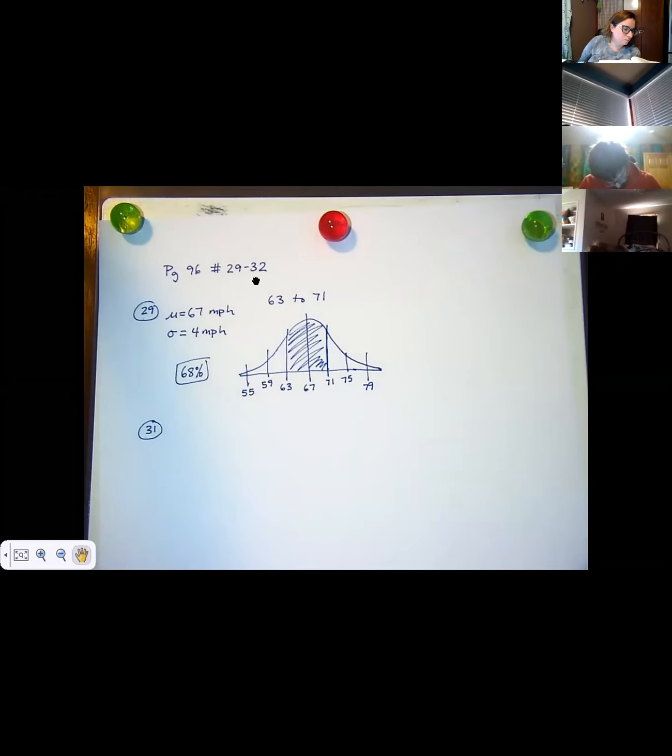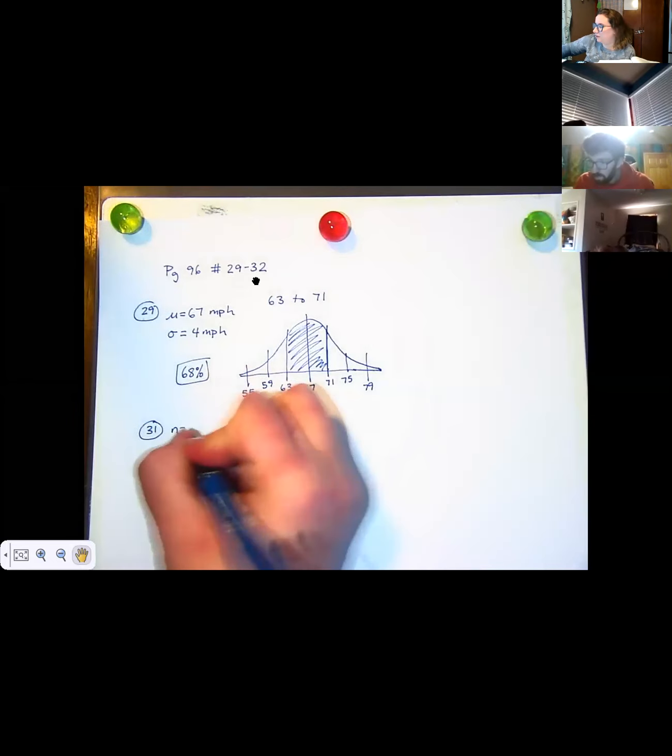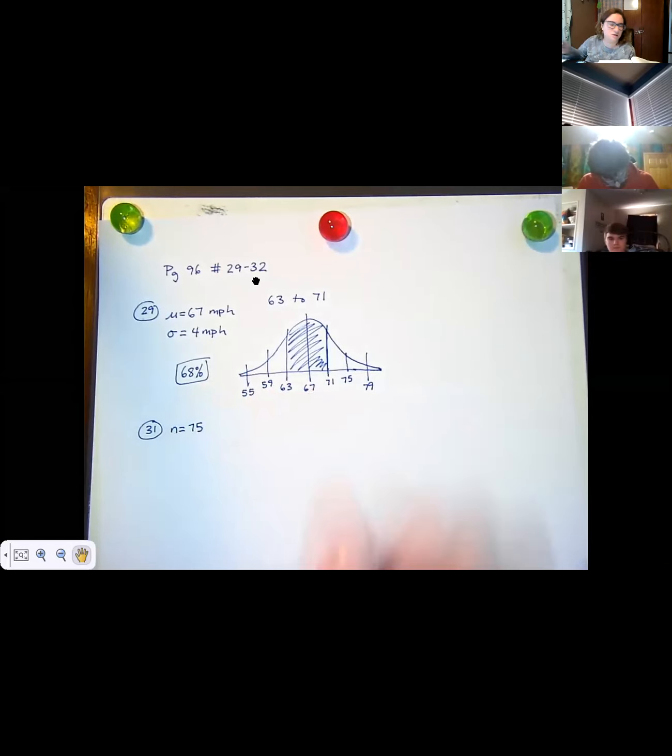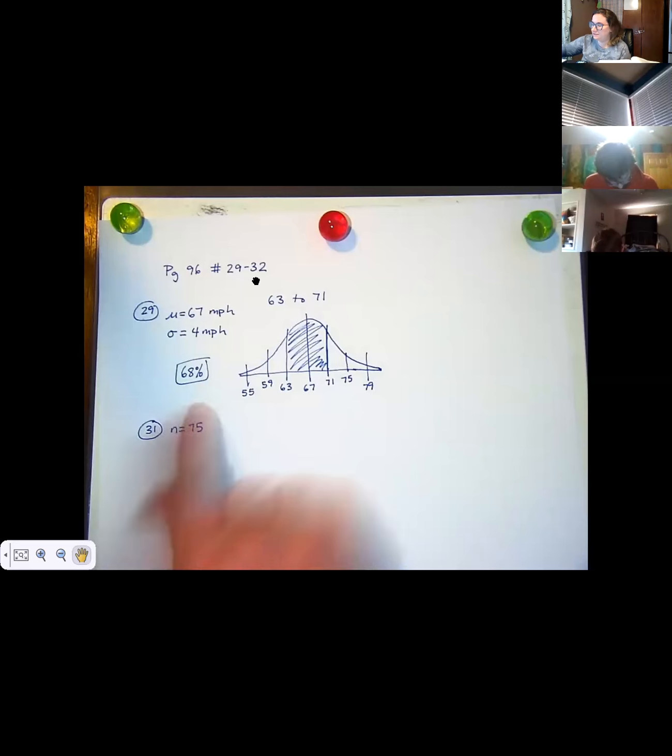Now we're going to do 31. Using the same sample statistics from exercise 30, assume the, no, 29, assume the number of vehicles in the sample is 75. So now we've got an N of 75. We've got 75 vehicles that they saw along the highway. Estimate the number of vehicles whose speeds are between 63 and 71 miles per hour. Okay, so how can I figure out what percent or what amount of vehicles that is?